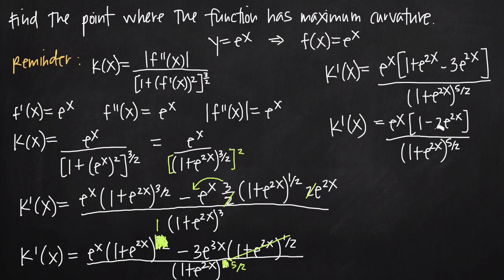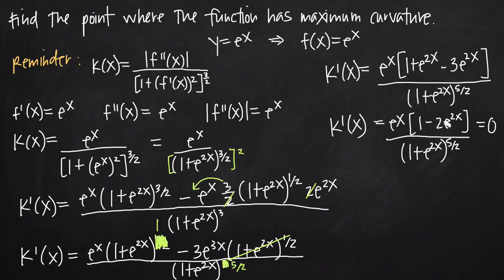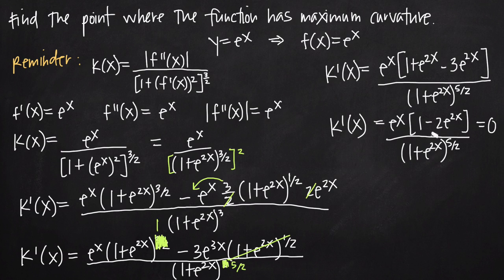We've simplified as much as possible, so we set k prime of x equal to zero. We're looking for the numerator to equal zero, because zero over something gives zero. If we set the denominator equal to zero the function would be undefined, so we focus on where the numerator equals zero. The numerator equals zero if either e to the x equals zero or 1 minus 2e to the 2x equals zero. Since e to the x is never zero, we only need to consider 1 minus 2e to the 2x equals zero.